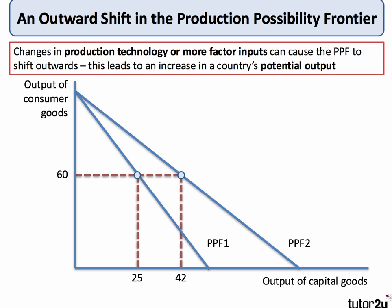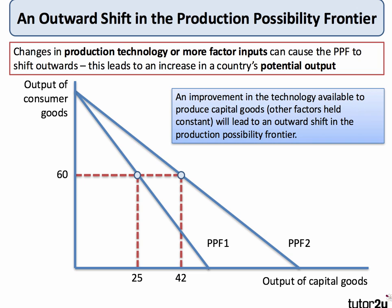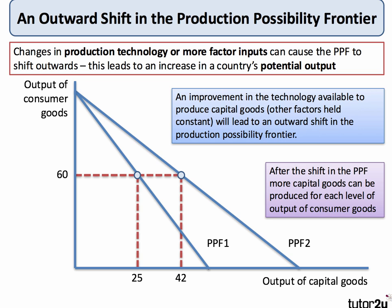Let's think about how the PPF can shift outwards. In this example, the PPF shifts out from PPF 1 to PPF 2. This means that if we are producing 60 consumer goods, instead of being able to produce 25 capital goods, we can now produce 42. An improvement in technology available for capital goods production has led to this outward shift — more capital goods can be supplied for each level of consumer goods output, representing an improvement in economic welfare.